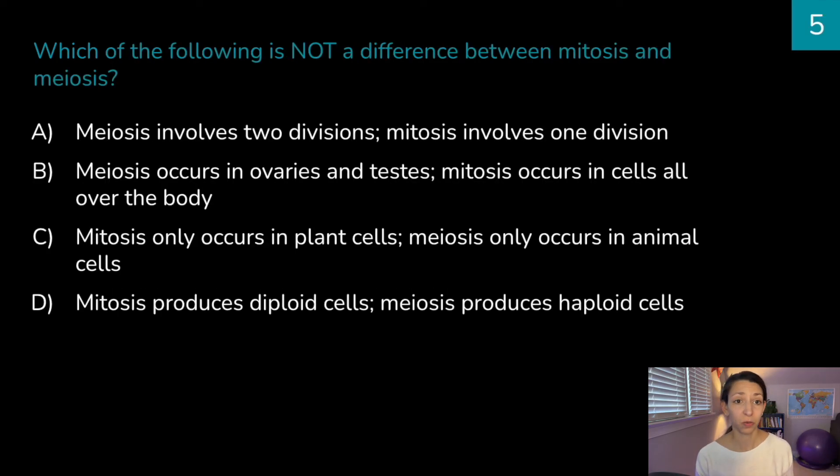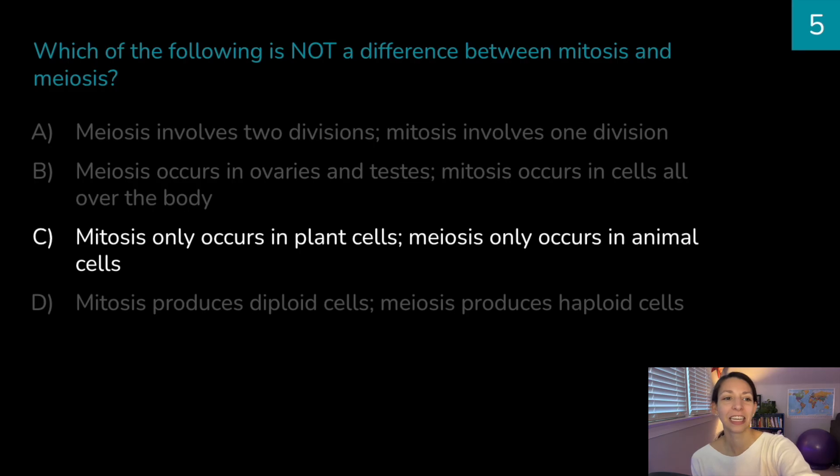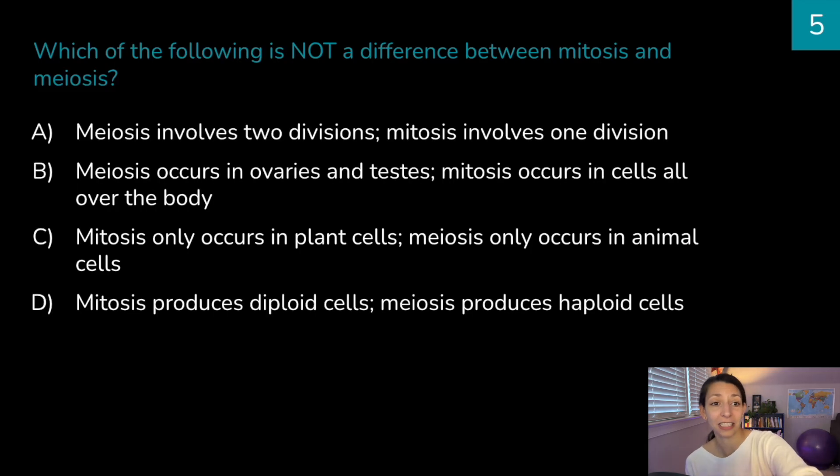All right, last one for today. Which of the following is not a difference between mitosis and meiosis? Meiosis involves two divisions. Mitosis only involves one division. Meiosis occurs in ovaries and testes. Mitosis occurs in cells all over the body. Mitosis only occurs in plant cells. Meiosis occurs in animal cells. Or mitosis produces diploid cells. Meiosis produces haploid cells. Think about it. Correct answer is C. This is not true. Mitosis does not only occur in plant cells, and meiosis does not only occur in animal cells. All the other things, though, in this list are true differences between mitosis and meiosis.